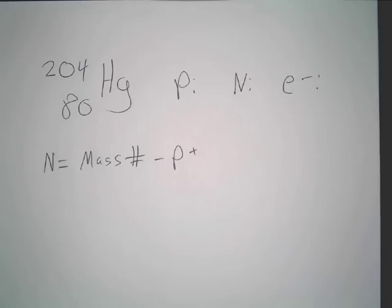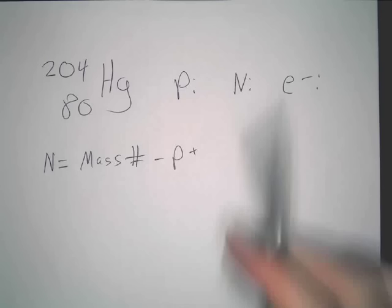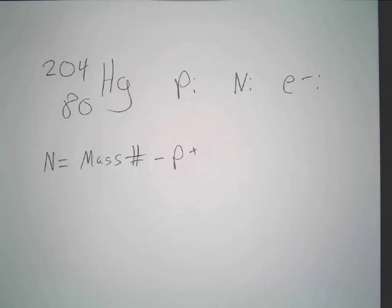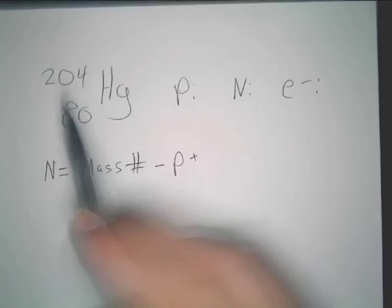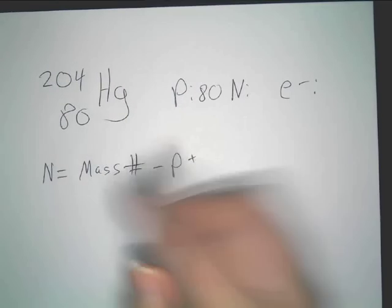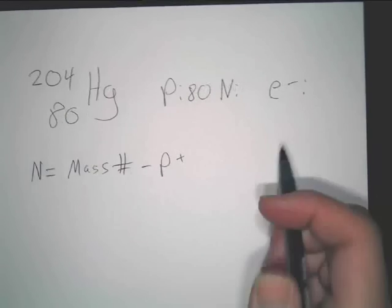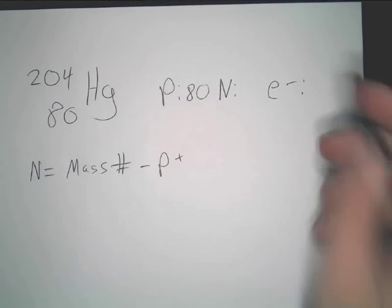Now, really quickly, let's go over this because there's more to do. We have protons. We know that if you look it up on your table, mercury is 80. It also is confirmed right here. Whenever you see a notation like this, the protons are always on the bottom, the atomic number.